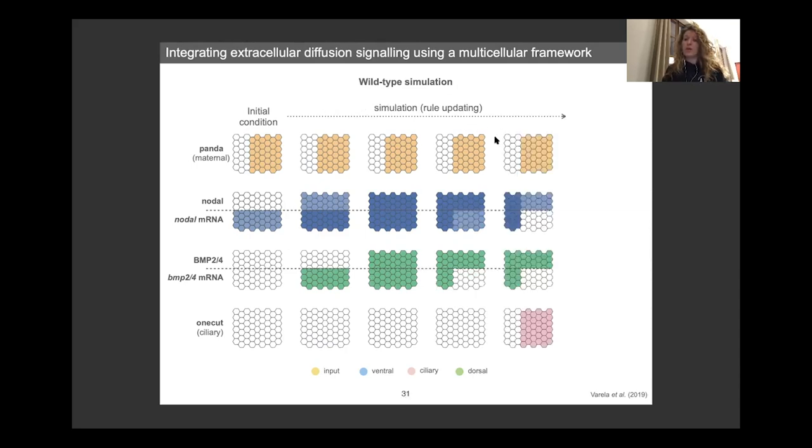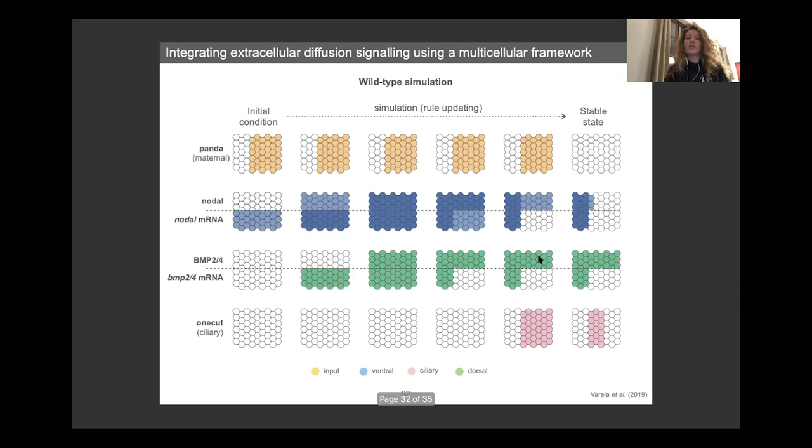In the second time, the presence of PANDA will tend to repress the expression of nodal on the ciliary and dorsal side. So it will start to be restricted to the ventral side. And in parallel, the BMP24 production on the ventral side will diffuse toward the dorsal side of the embryo. And finally, we reach a stable state as expected in the experimental observation where we have a ventral side expressing nodal, a dorsal side expressing BMP24, although being produced from the ventral side, and a central ciliary band.